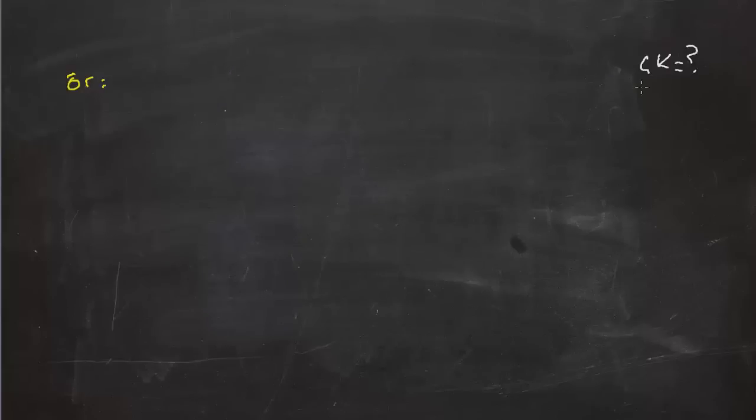Son bir örnek yapalım arkadaşlar. Son örneğimiz bize şunu söyleyecek: mesela elimizde bir x sayısı var, x'in karesinin -1 olduğunu biliyoruz. Bu durumda aslında iki tane kök var: x = ±i. Bunu biliyoruz.